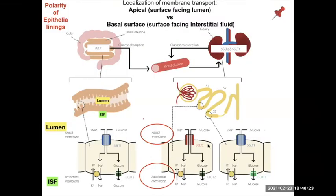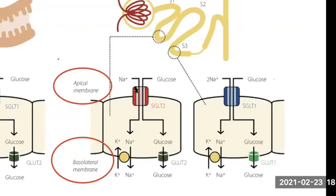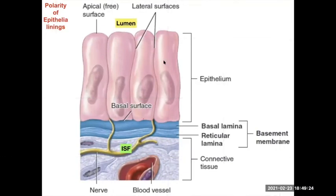This gets into the polarity of transporting epithelial linings — surfaces where substances are brought into or exchanged with the body. The same is true in the kidney: filtrate passes through the tubules, with interstitial fluid and blood vessels on the outside. On the apical surface facing the lumen, sodium-glucose transporters actively bring in every drop of glucose. On the basal surface, glucose can exit by diffusion since the concentration is lower there than inside the cell.